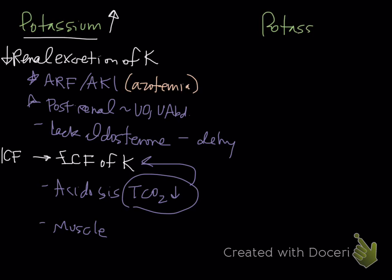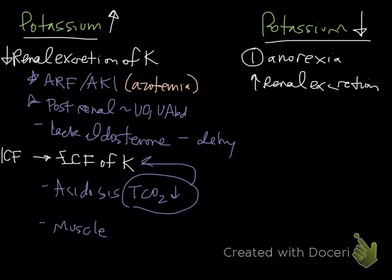Let's talk about potassium decrease. Our number one reason for it to be decreased is anorexia with continued urination. But you can have increased renal excretion, and this most often is from diuresis - some sort of diuresis, even animals that are PUPD.